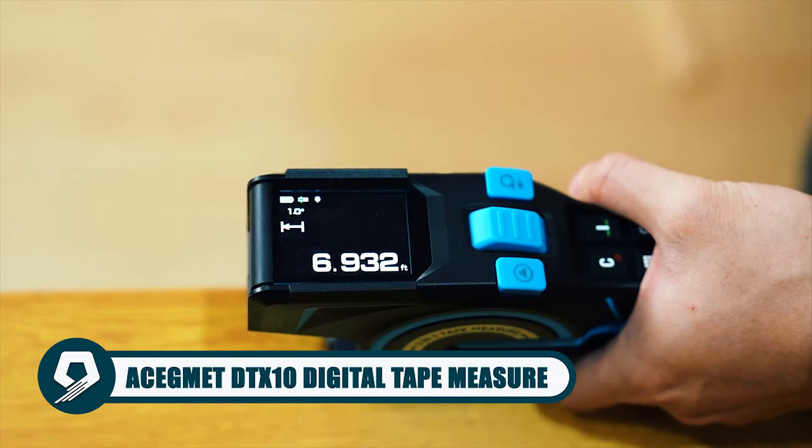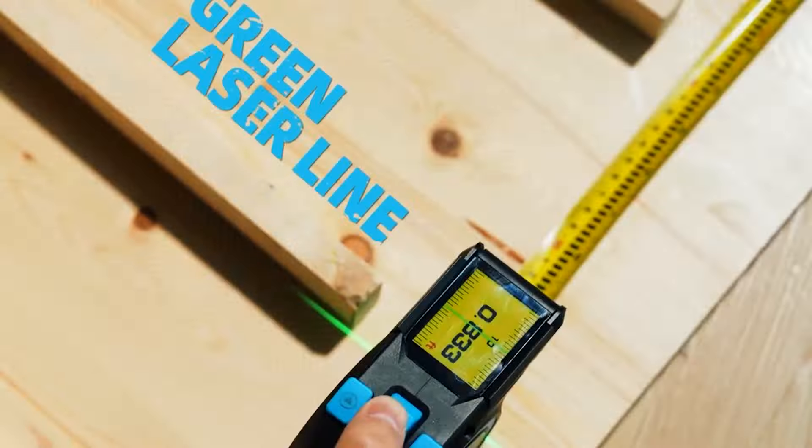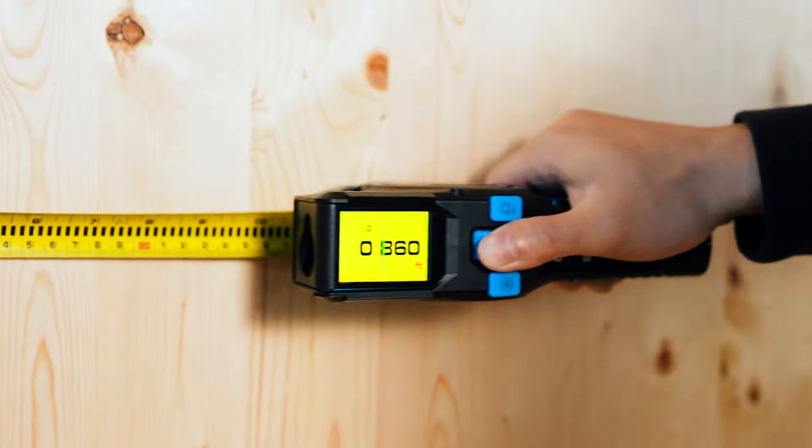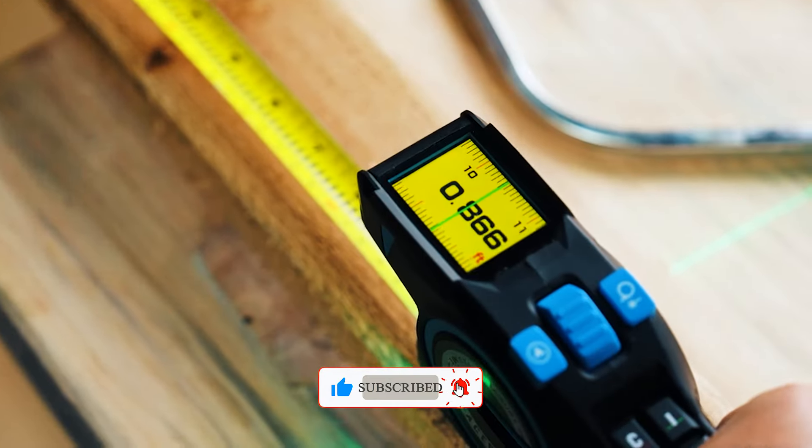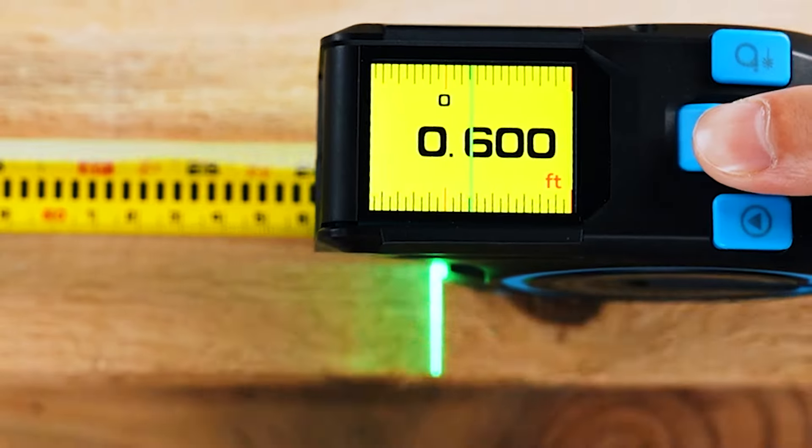Redefine precision in measurement with the Segment DTX10 Digital Tape Measure. A 3-in-1 marvel, it integrates a steel tape, digital tape, and laser ruler for efficient measuring. With plus or minus 0.1mm accuracy, an extended laser line, and a high-contrast IPS display, this ergonomic tool offers unparalleled reliability for craftsmen, designers, and builders.